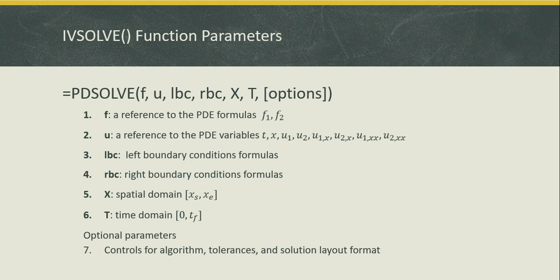The third parameter is a reference to the left boundary conditions formulas. The fourth parameter is a reference to the right boundary conditions formulas for each equation. The fifth and sixth parameters define the spatial and time domain. Additional optional parameters allow you to control the algorithm and tolerances as well as the solution layout format.